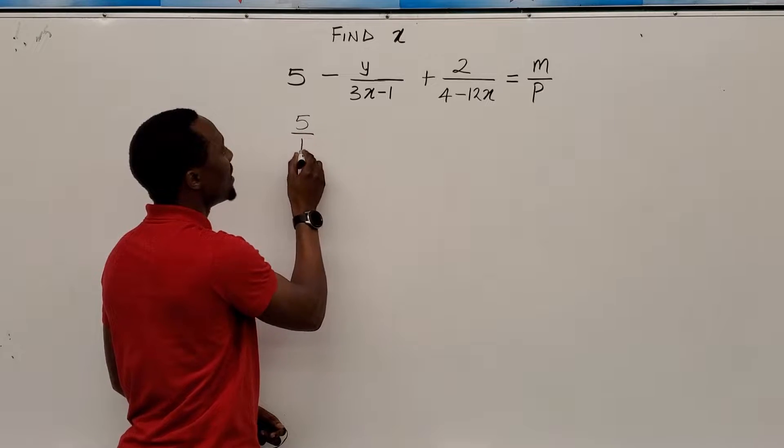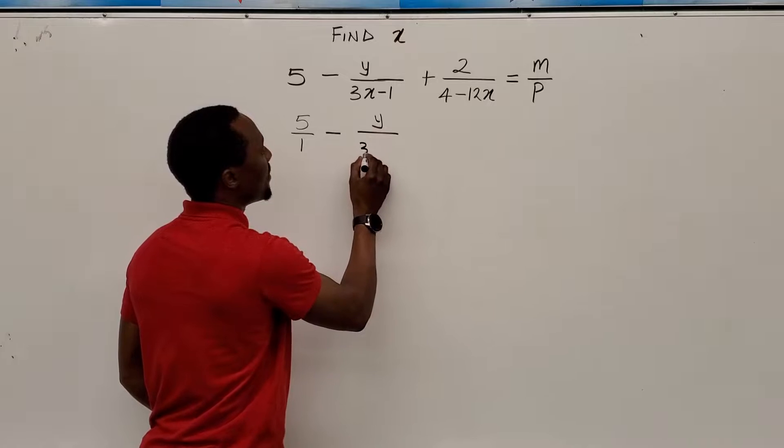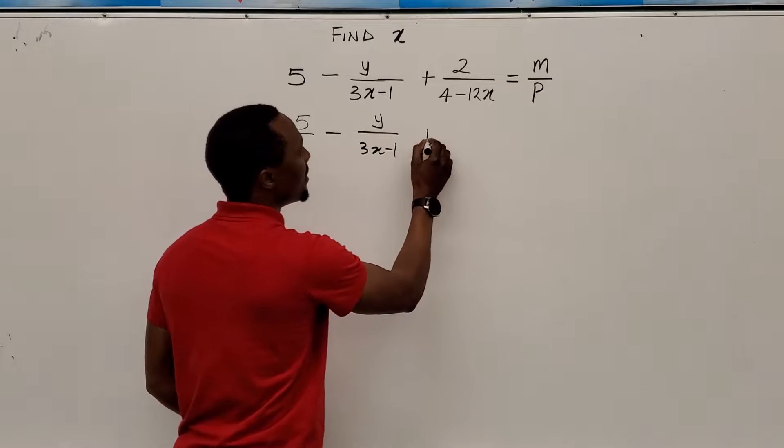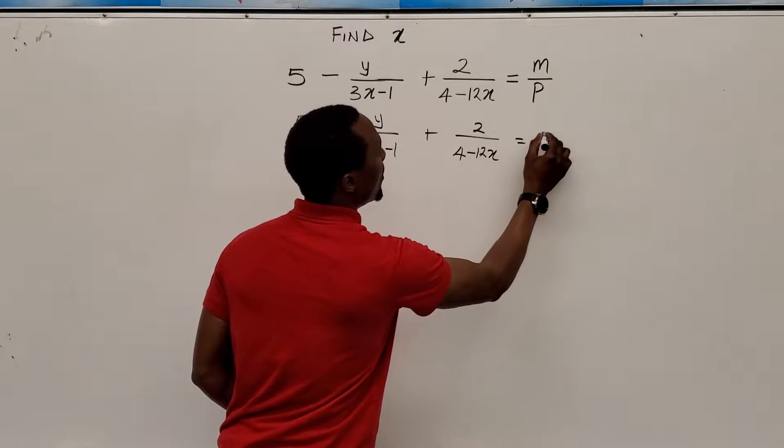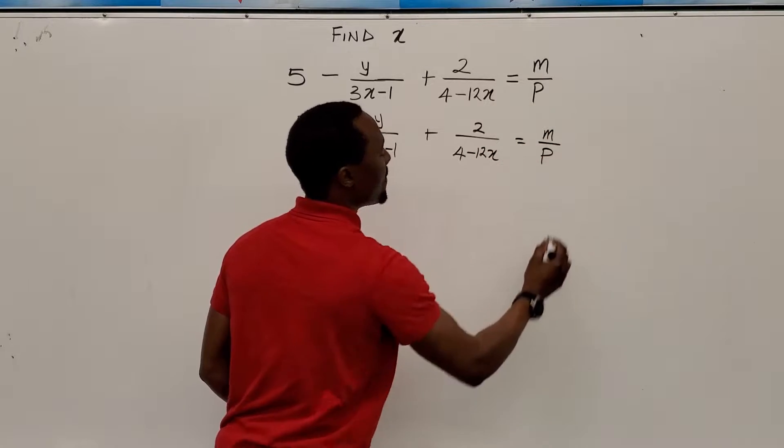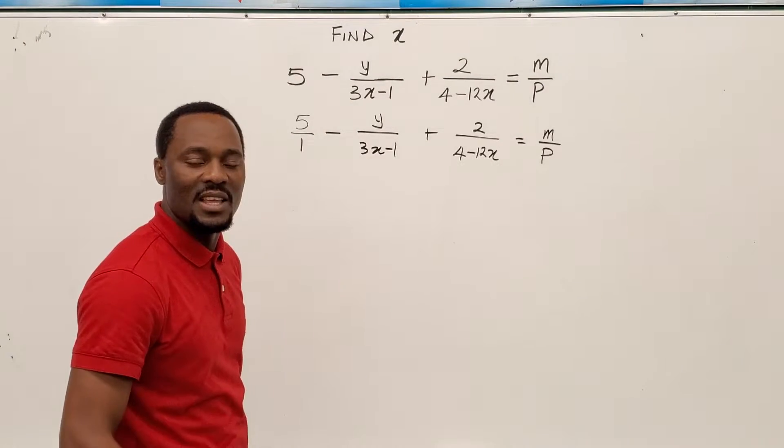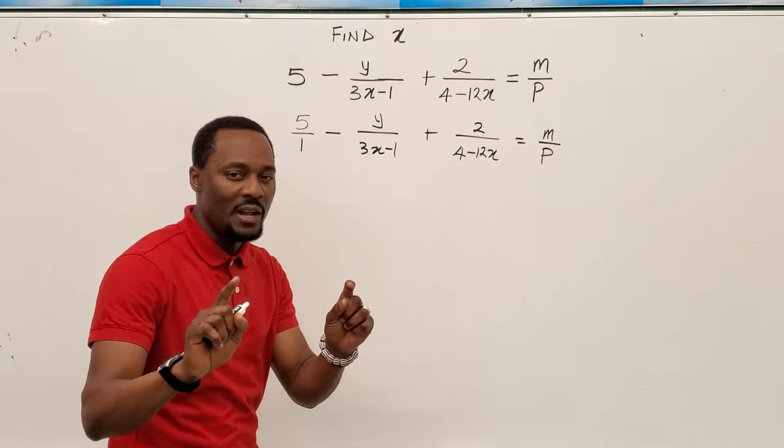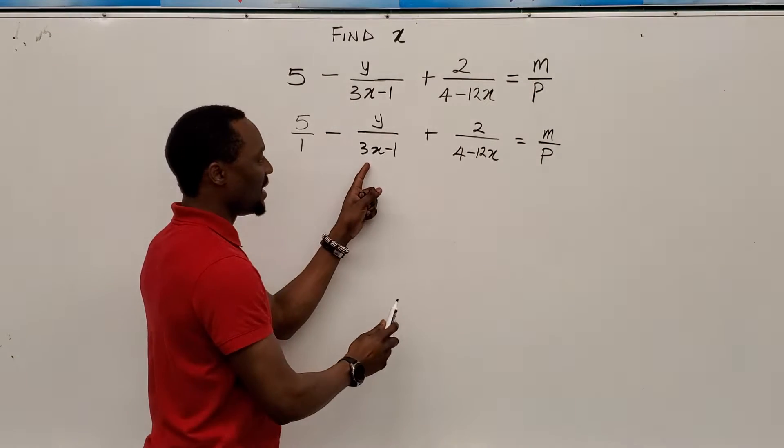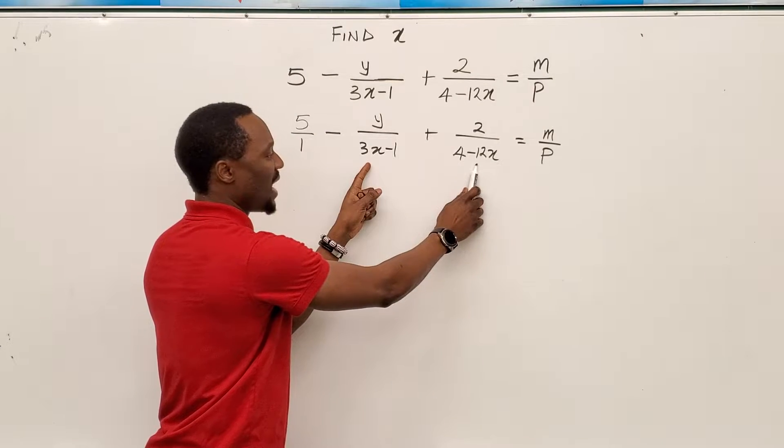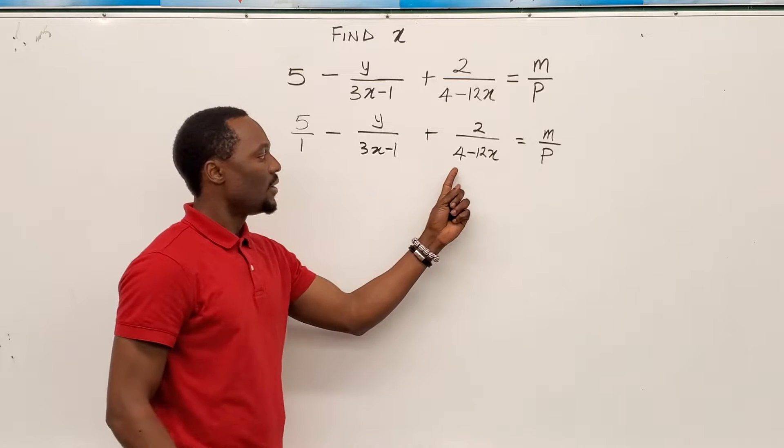So 5 over 1 minus y over 3x minus 1 plus 2 over 4 minus 12x equals m over p. So at this point I have all fractions and then I can think of the least common multiple. But there's something strange about this question. If you consider this and this, it looks like there's something that we could bring out of it.